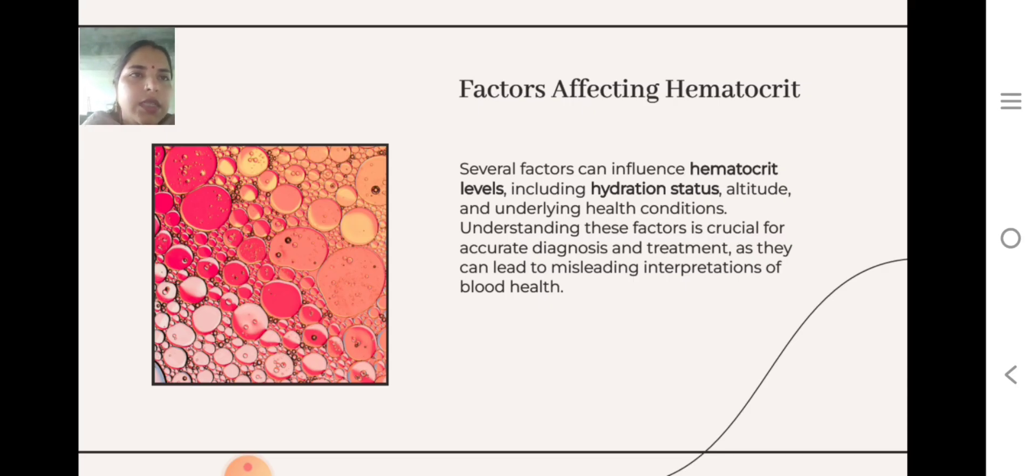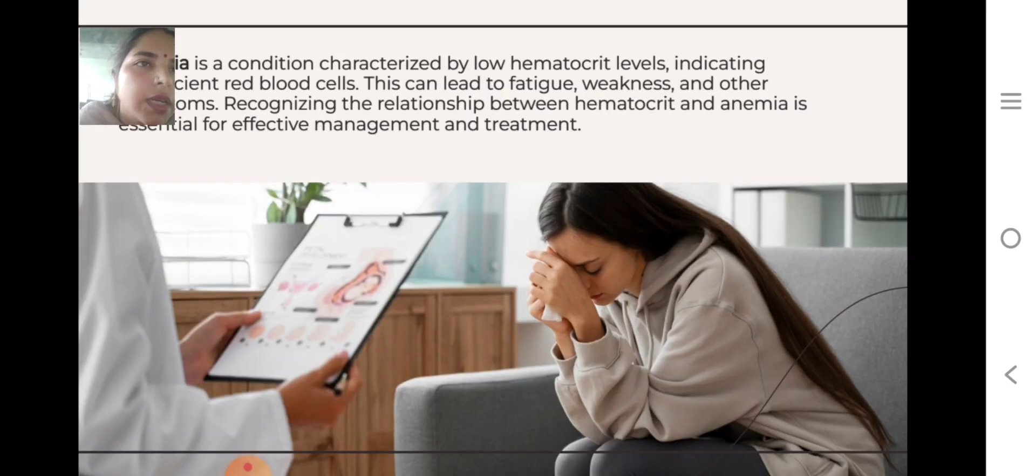Factors Affecting Hematocrit. Several factors can influence hematocrit levels including hydration status, altitude, and underlying health conditions. Understanding these factors is crucial for accurate diagnosis and treatment, as they can lead to misleading interpretations of blood health.